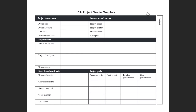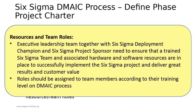The project charter is a template that is sometimes even signed by the champion or the organization leadership and the team leader for the Six Sigma project at the beginning, so they can agree on the target and the goals they are going to achieve at the end of the implementation.